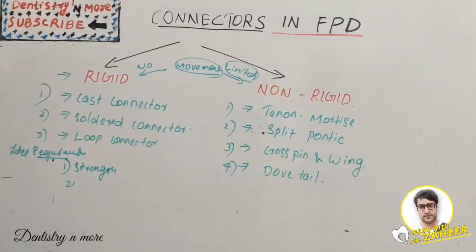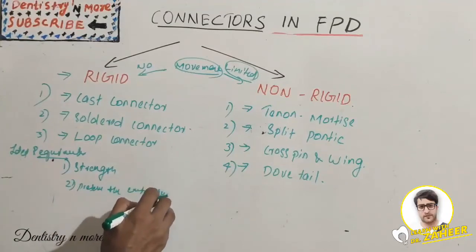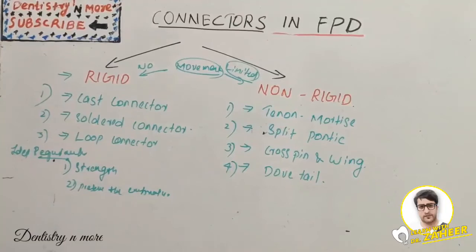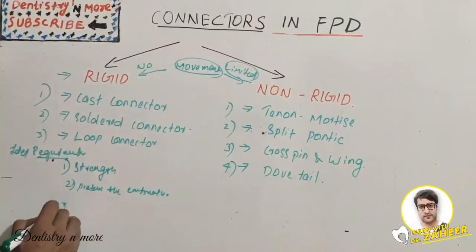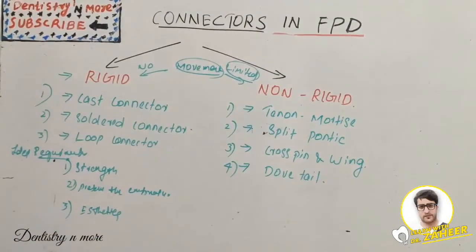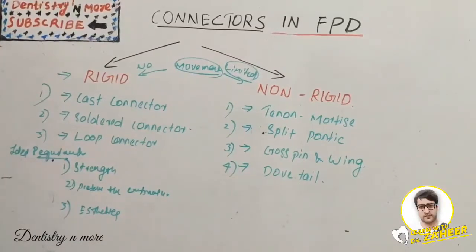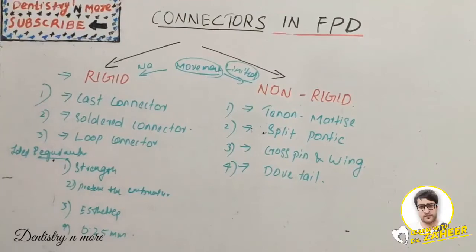The second ideal requirement is that the connector should occupy the normal interproximal area — that is, it should preserve the embrasure and not be so wide that it interferes with normal interproximal dimensions. The third requirement is that it should be placed lingually and incisally to provide better aesthetics, and the gap should be 0.25 millimeters.